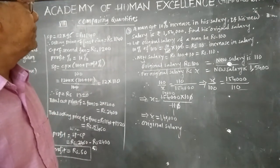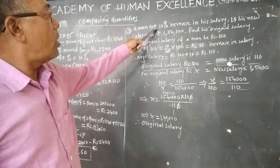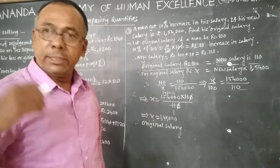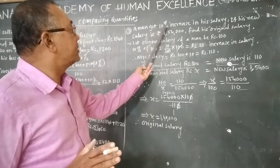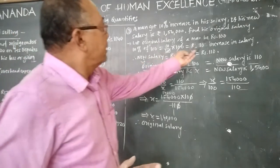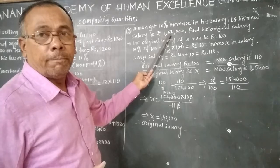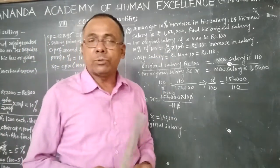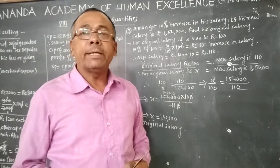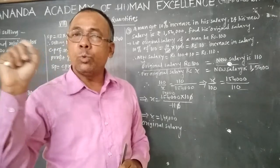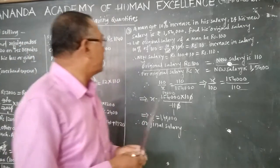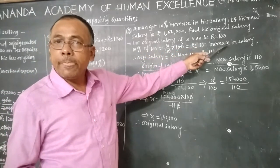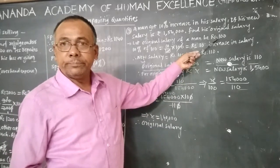Now we see the third example. A man got a 10 percent increase in his salary. We don't know his original salary, but the increase percentage is 10 percent. If his new salary is rupees 1,54,000, find his original salary. We don't know the original salary, so let us assume the original salary of the man to be rupees 100.